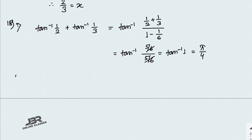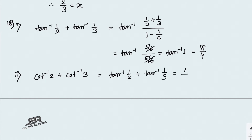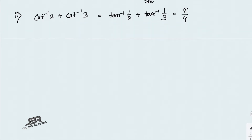Number 2 in sum 18: cot⁻¹(2) + cot⁻¹(3). You can convert cot⁻¹ into tan⁻¹, so the first one becomes tan⁻¹(1/2) and the second becomes tan⁻¹(1/3). Again your answer is π/4, the same as the previous one.